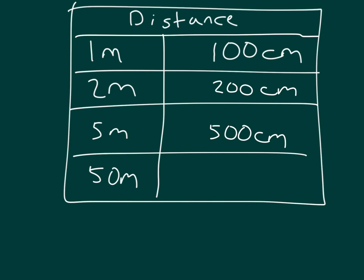50 meters? Well, that's 10 times more than the previous answer, so it would be 5,000 centimeters. A centimeter is 100 times smaller than a meter, or a meter is 100 times larger than a centimeter. So the relationship again, 1 meter equals 100 centimeters.